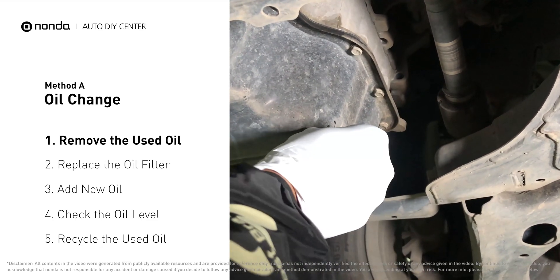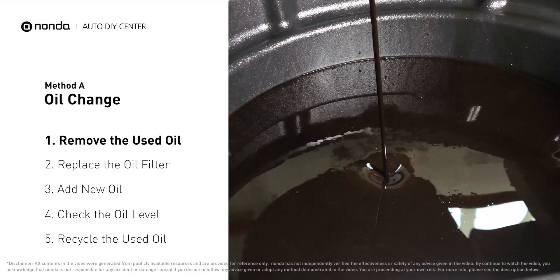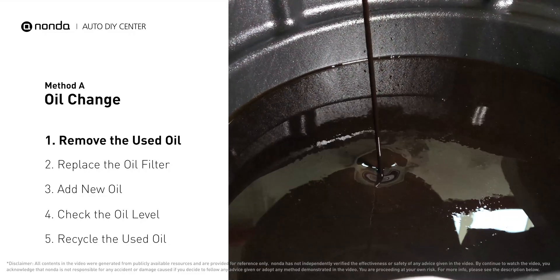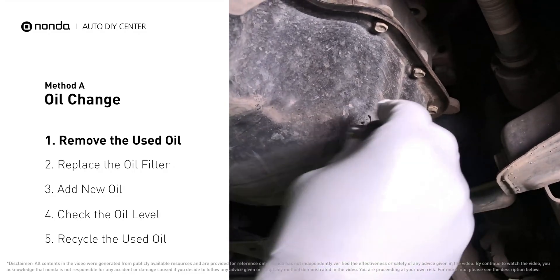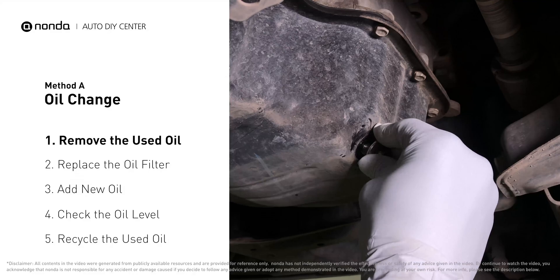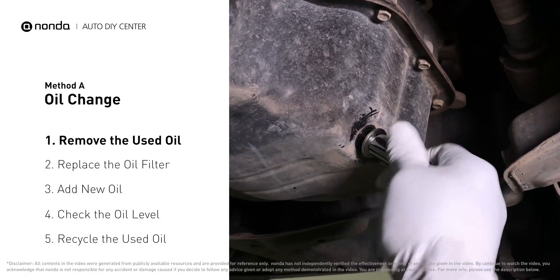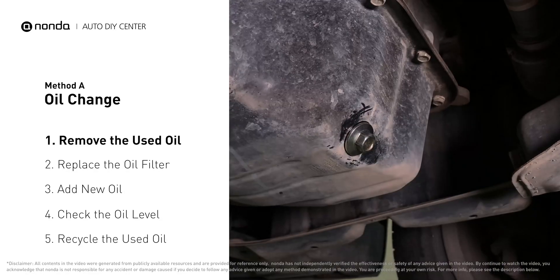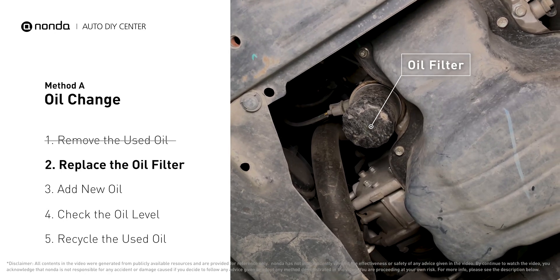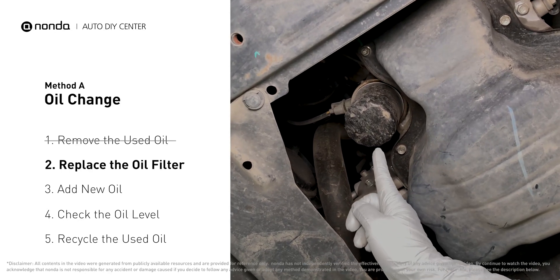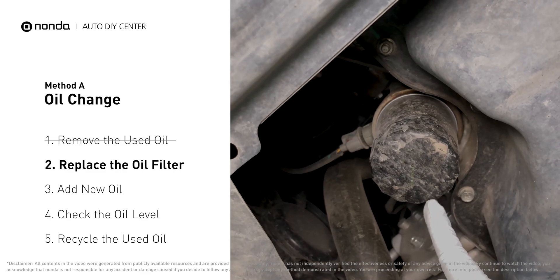Once the plug is removed, the oil should start flowing out into your collection pan. Once all the oil is drained, replace the drain plug and tighten it back on. The oil filter is usually located beside the oil pan or under the hood of your vehicle near the engine.